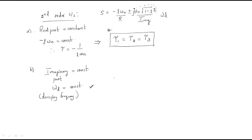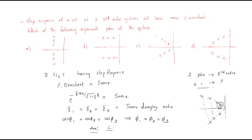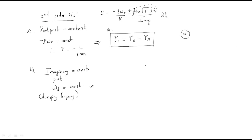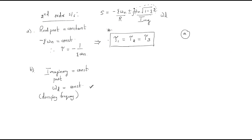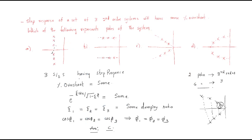Applying these concepts to the options: for option A, all poles have the same real part — for example, all equal to -1 — so the time constant is constant. For option B, the imaginary part is constant, so the damping frequency ωd is constant. For option C, which we already solved, the peak overshoot is constant because the angle (and hence damping ratio) is the same.